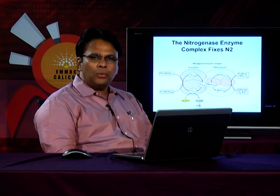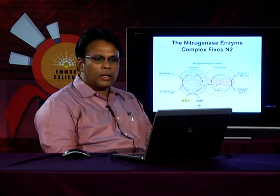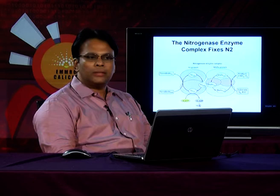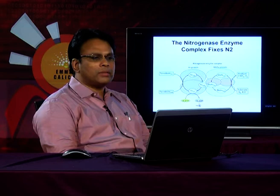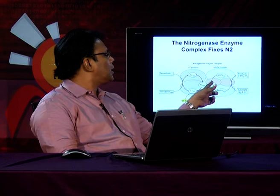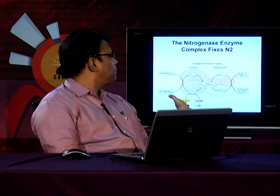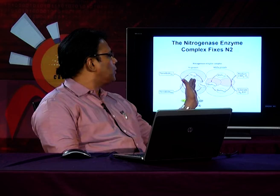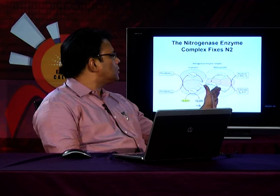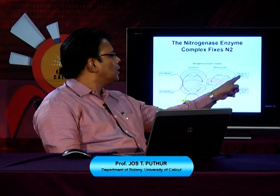We have seen how nodulation occurs, and now we will be seeing the nitrogen fixation process happening with the help of the nitrogenase enzyme. The nitrogenase enzyme complex consists of two portions: an Fe protein and a molybdenum-iron (MoFe) protein. It receives reducing power from ferredoxin, and utilizing 16 ATP, the Fe protein gets activated. Electrons are then passed to the MoFe protein, resulting in the reduction of nitrogen to ammonia.